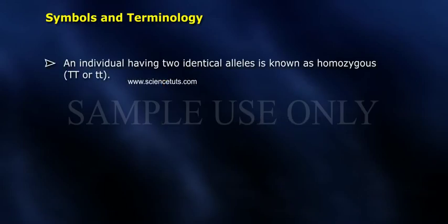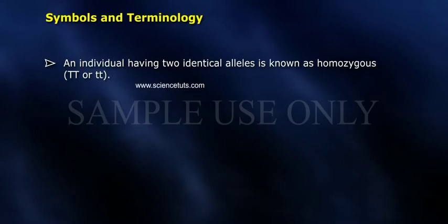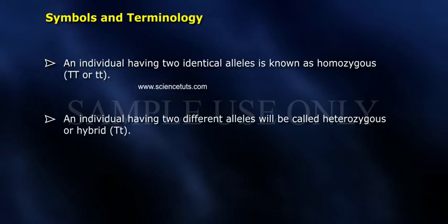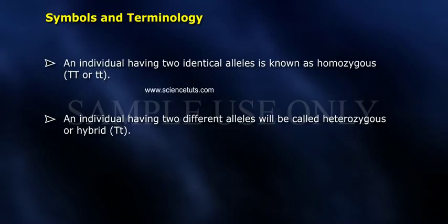An individual having two identical alleles is known as homozygous, such as TT or tt. An individual having two different alleles is called heterozygous or hybrid, such as Tt.